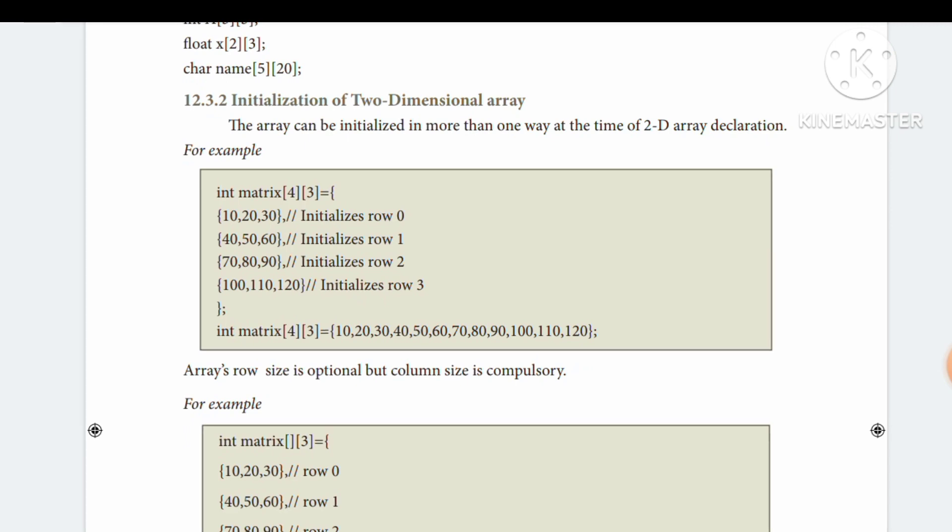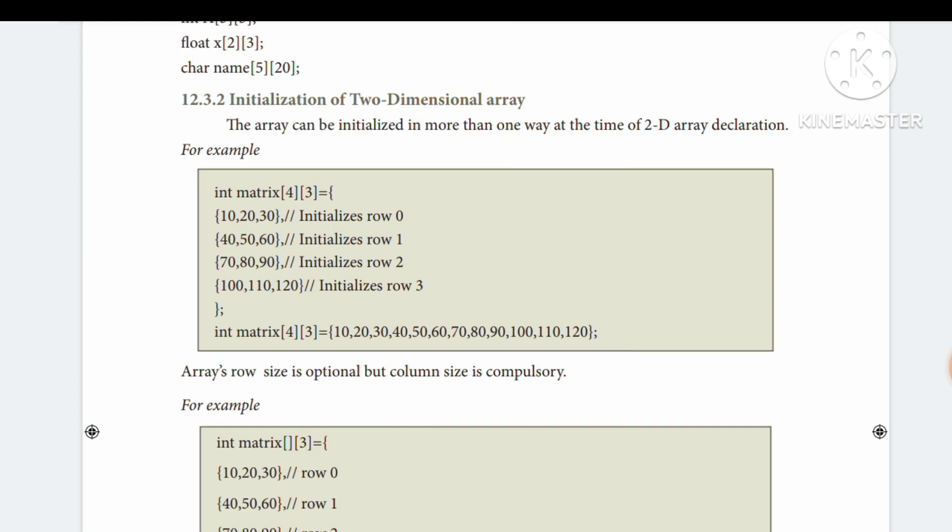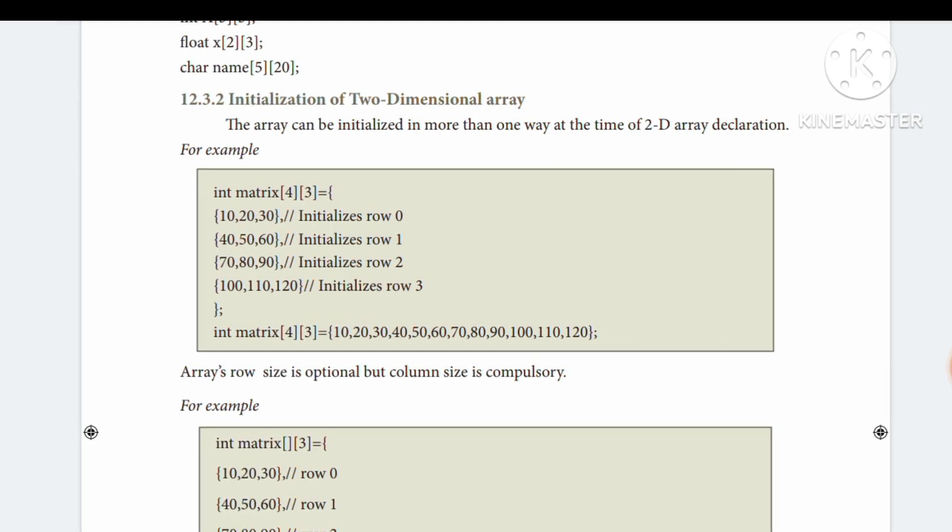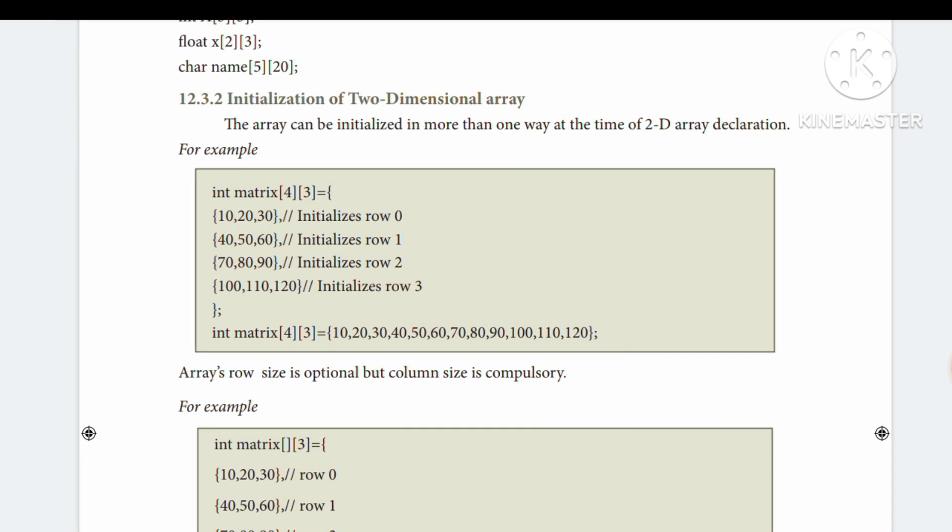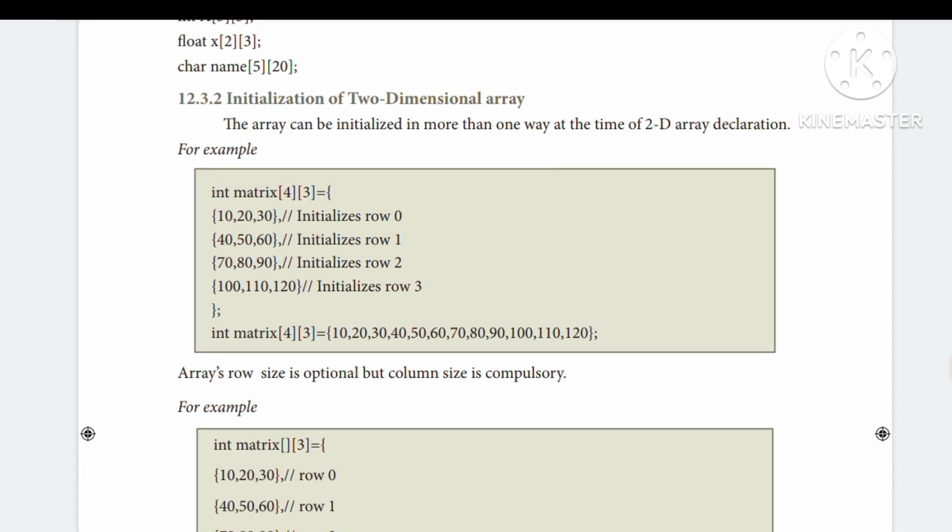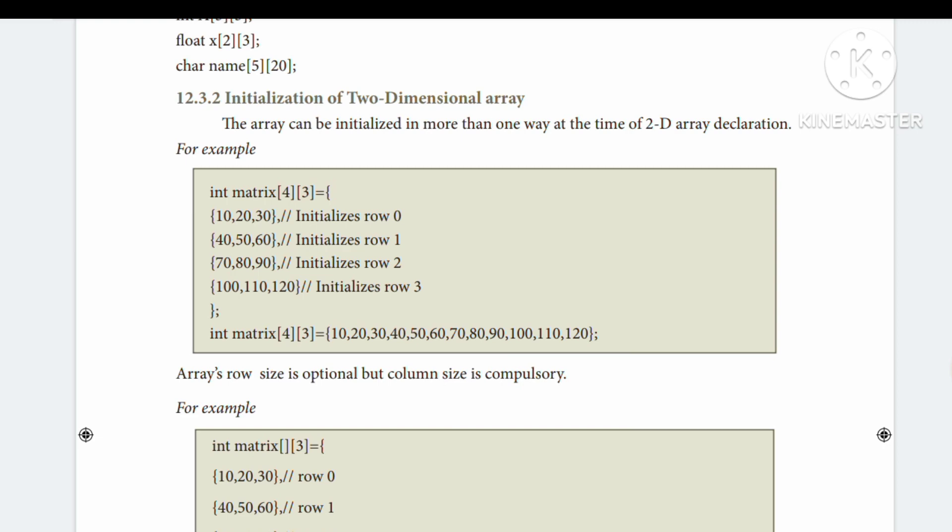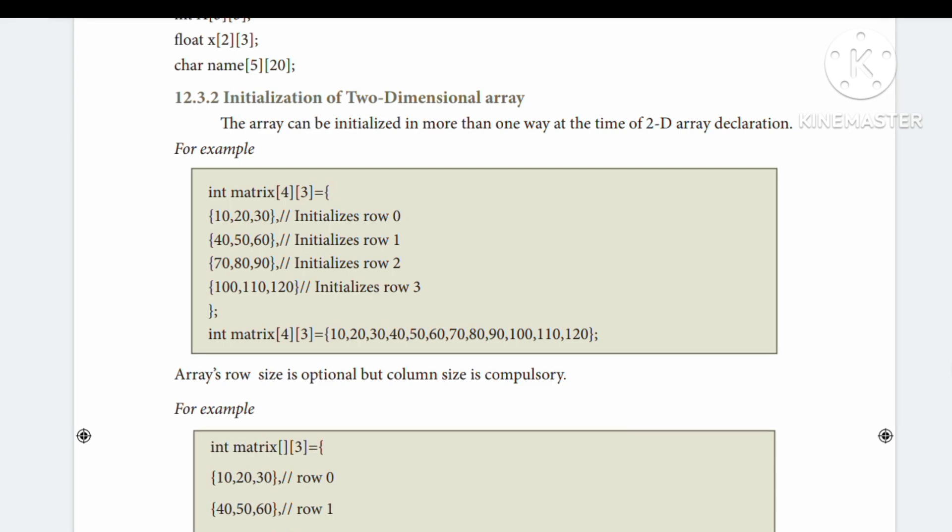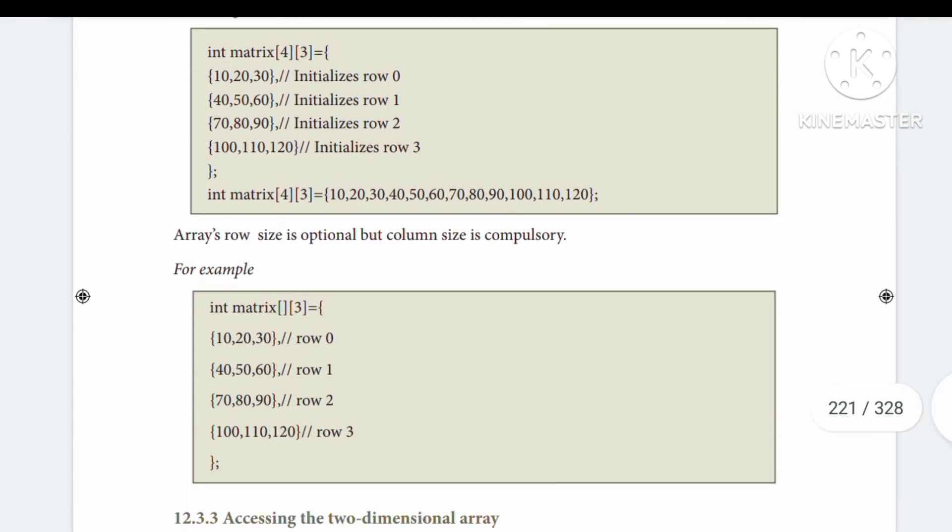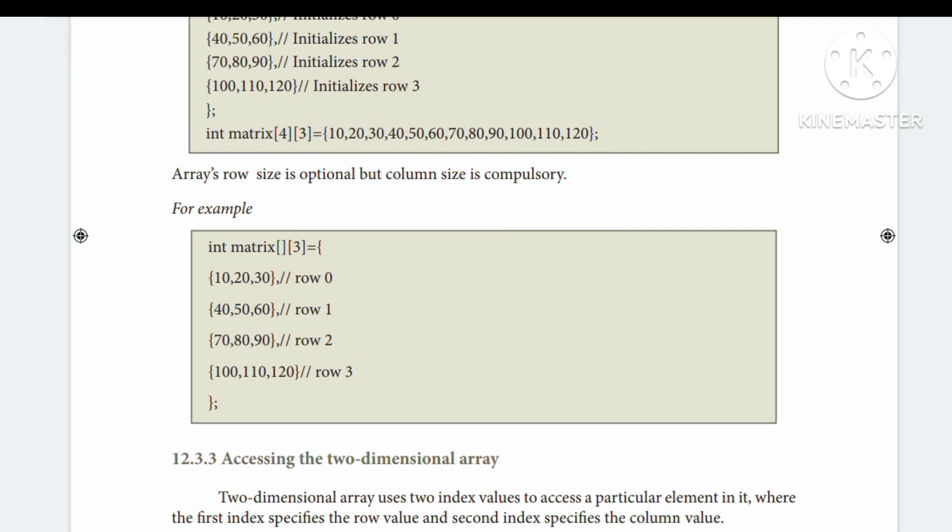Initialization means assigning values when we declare. For example, int a[4][3]. At the time of declaration, if we want to initialize the values, we can assign values in matrix format. The first row values, then second row values, and so on. You can arrange values row by row or column by column in matrix format.